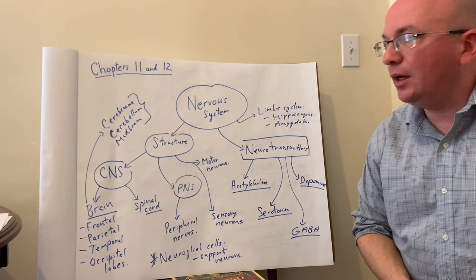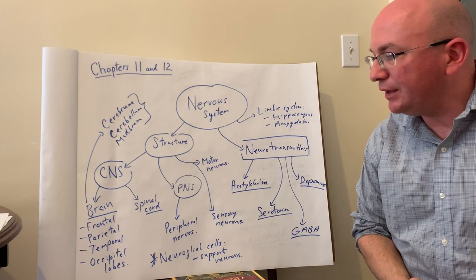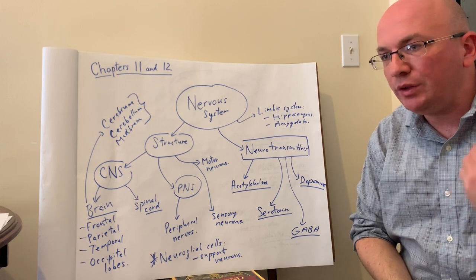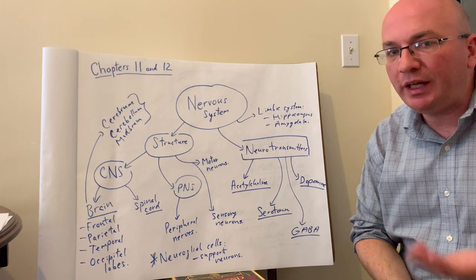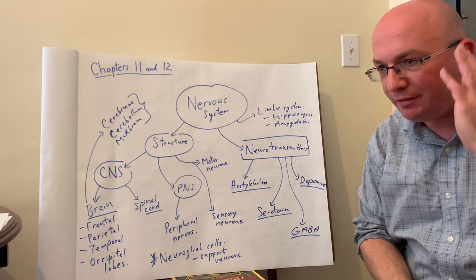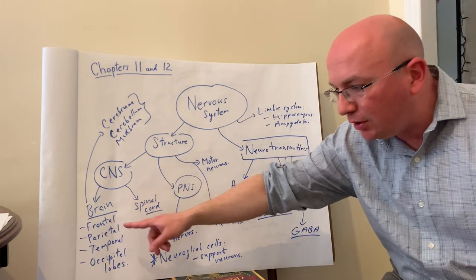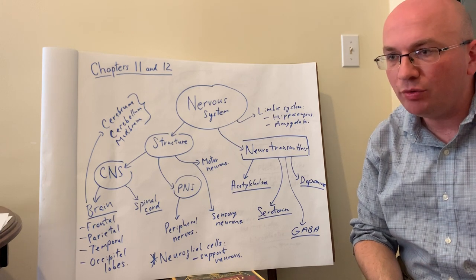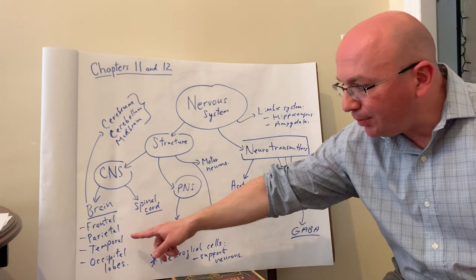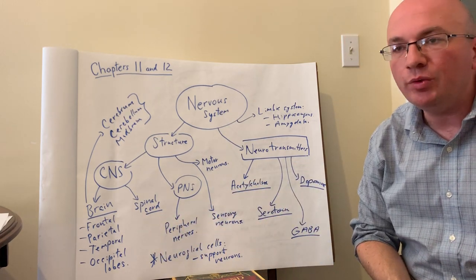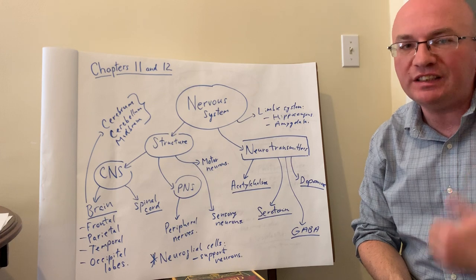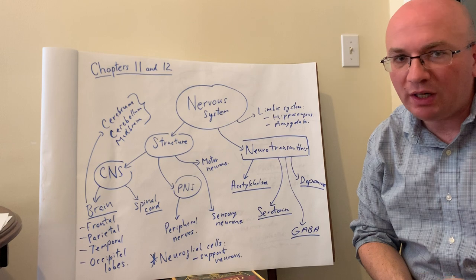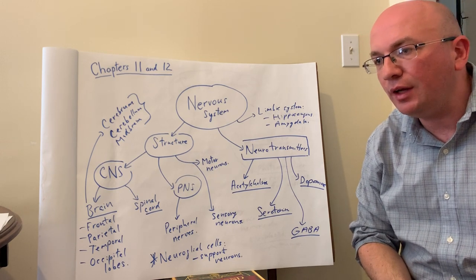A very important aspect of the nervous system is language processing. Language processing is found in two parts of the brain, primarily on the left side. The frontal lobe has Broca's area, which controls production of speech. And in the temporal lobe, again on the left side, we have Wernicke's area, which controls language — specifically understanding of speech. So two areas that deal with language processing are the left frontal and left temporal lobes.